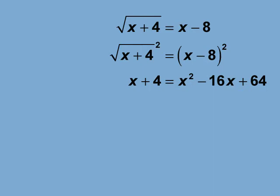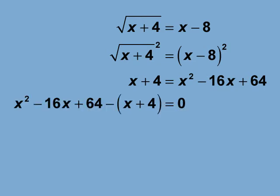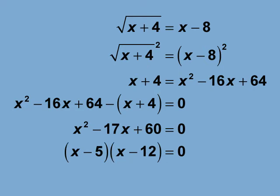The term on the right expands into a quadratic expression. Now combine all terms to one side of the equation, as shown. The result is a quadratic equation. It can be factored into the product of two binomials, as shown. There are two solutions: x equals 5 and x equals 12.